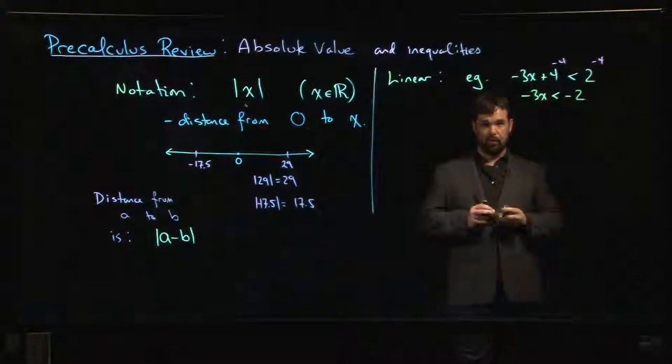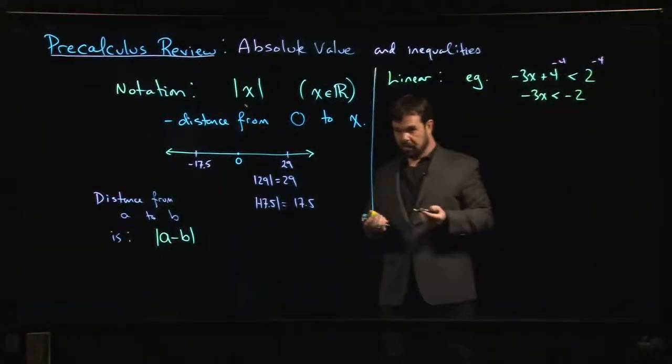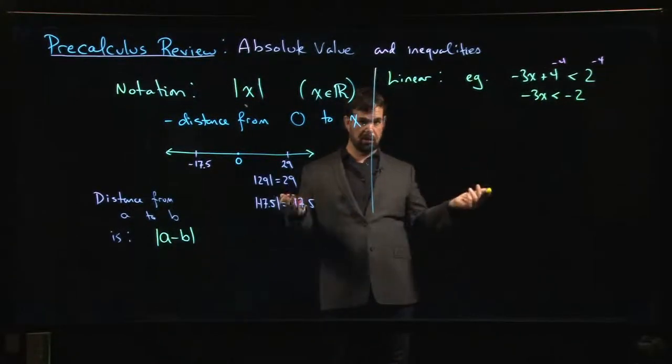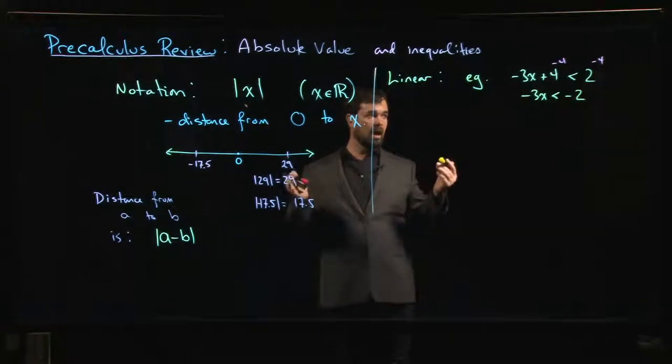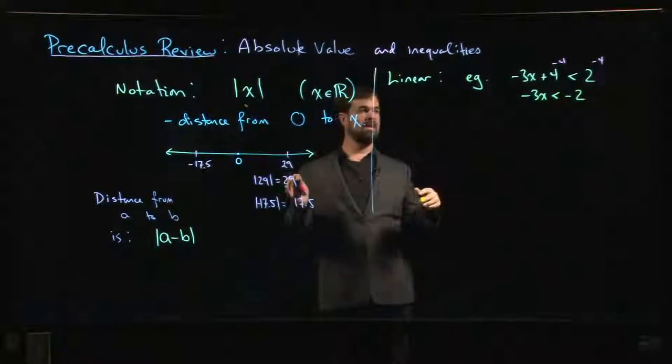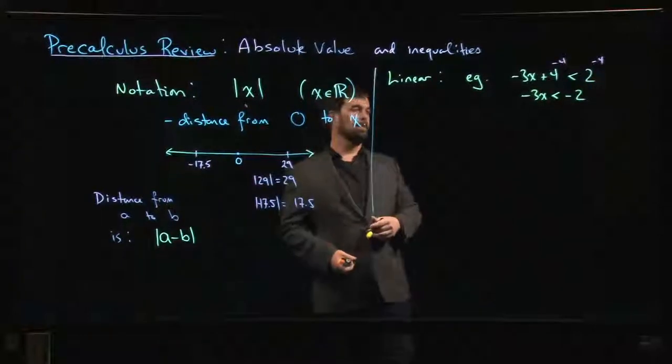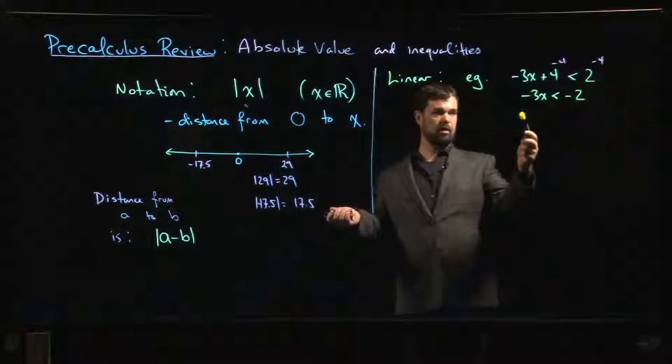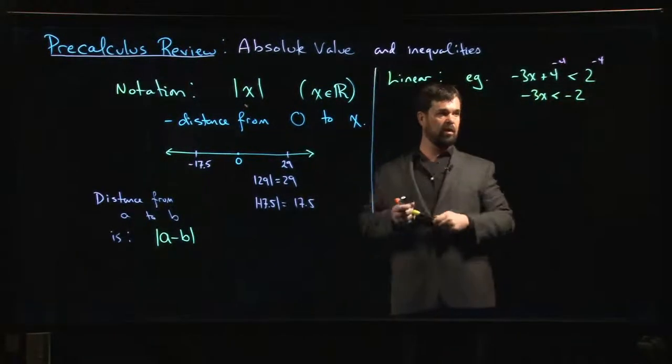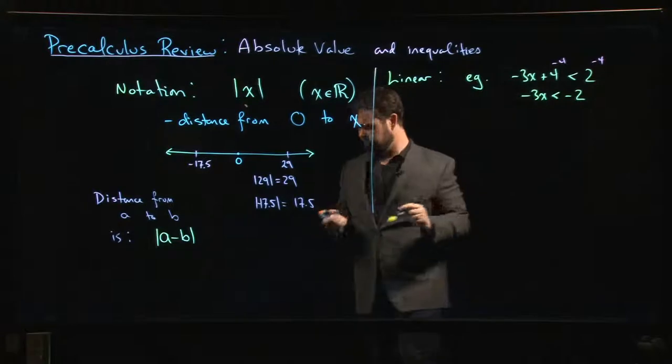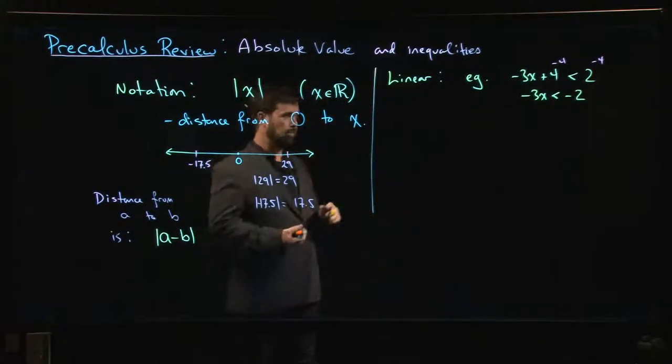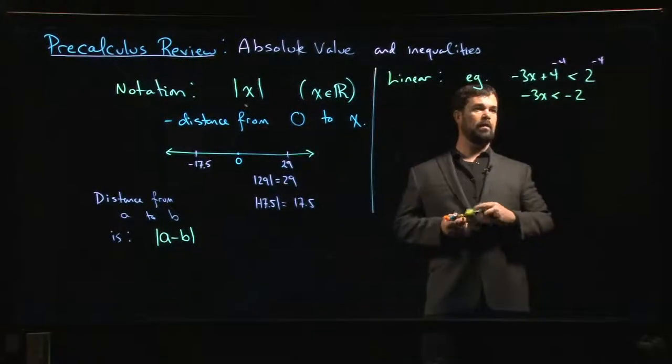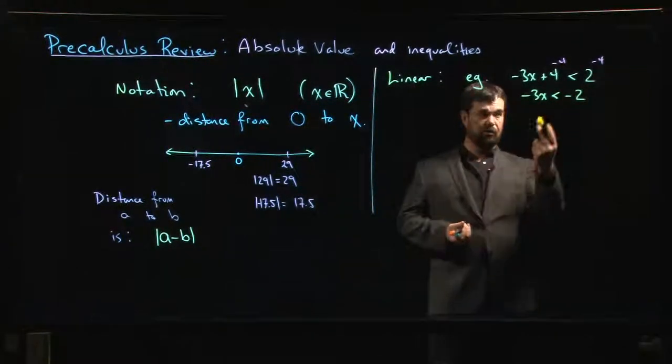Now the one mistake you got to watch out for, the mistake that people tend to make here is in division. You are allowed to multiply and divide both sides of inequality by any number except 0. You can never divide by 0, but also multiplying both sides by 0 destroys the inequality. If you multiply both sides by 0, you just get 0 is less than 0. That's not true. But any other number you can throw in. In particular, you might decide that you want to divide both sides by minus 3 to get rid of that minus 3 and solve for x.